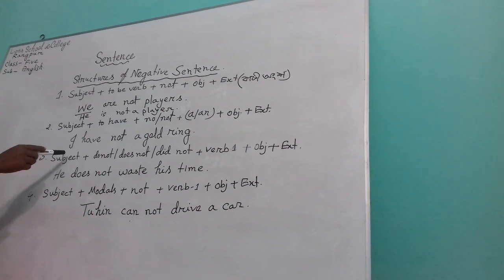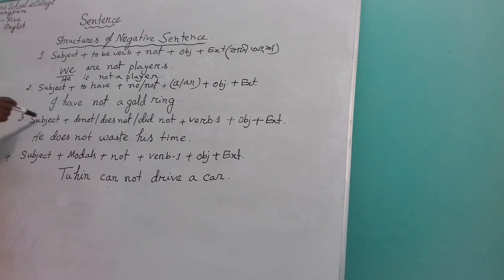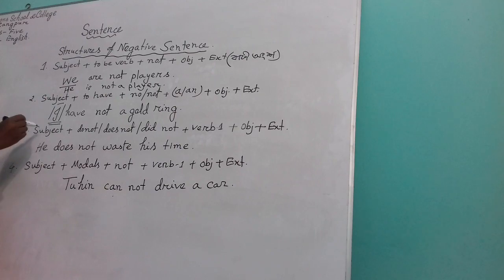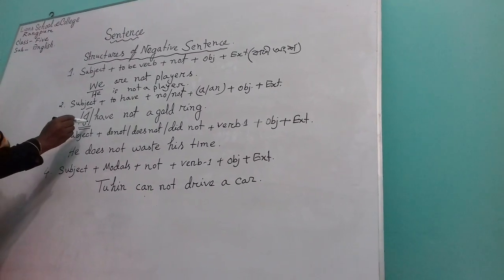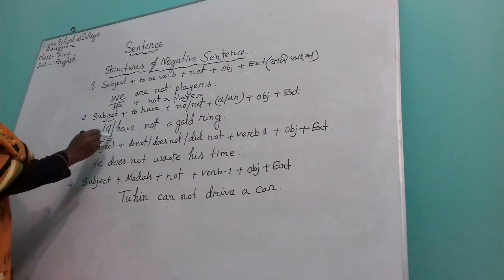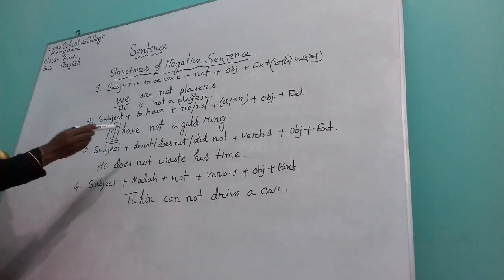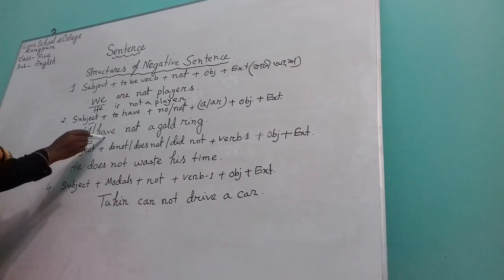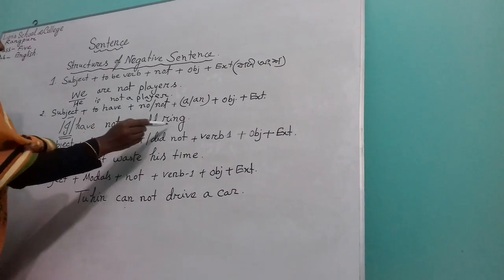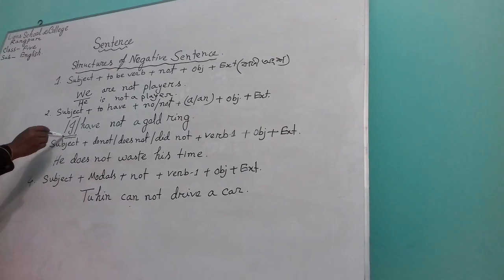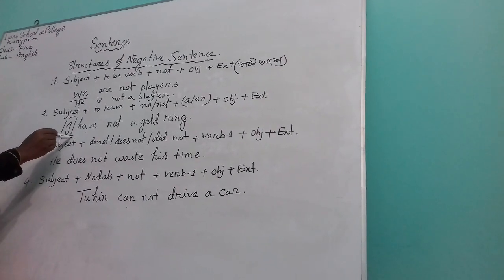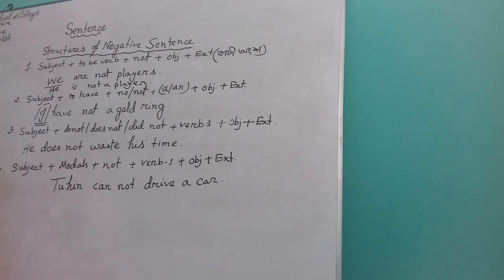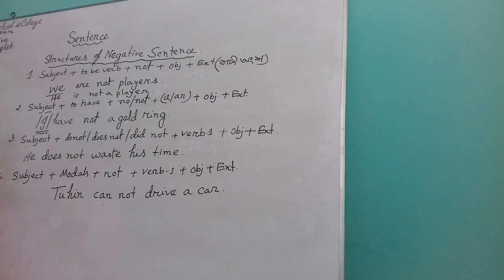Let's say another example. If I use 'he' as the subject, what can I say? I can say: 'He has not a gold ring.' Dear learners, in this way you have to write more sentences of this structure. If you learn well, you have to write more and more sentences of this structure.